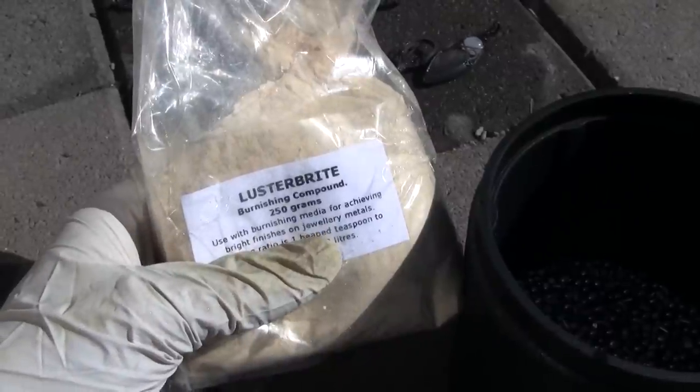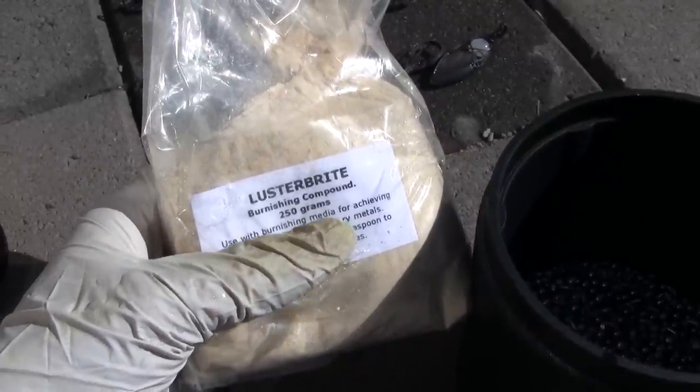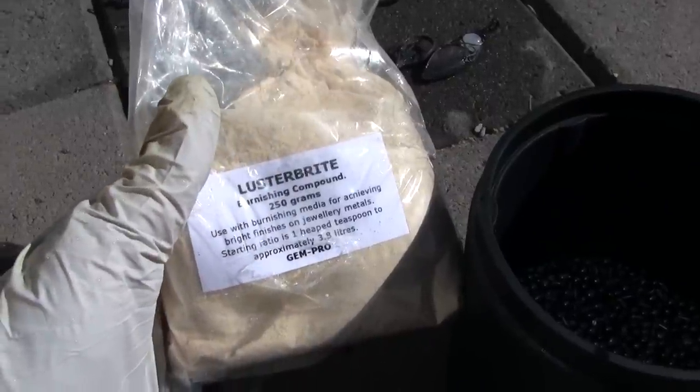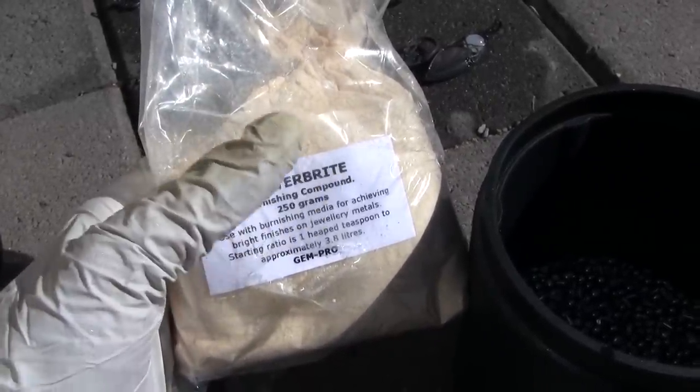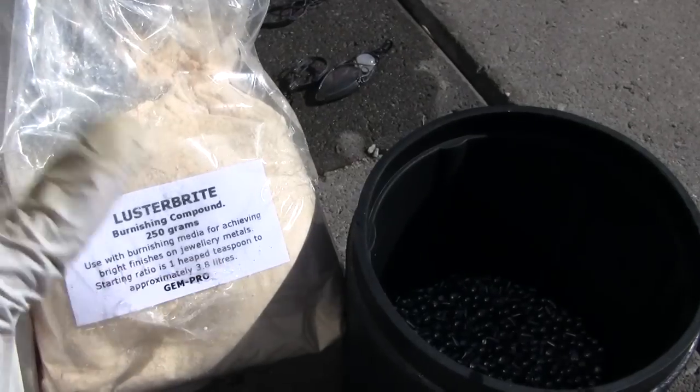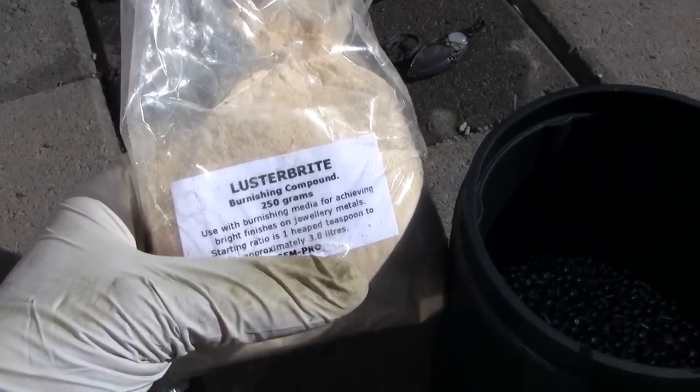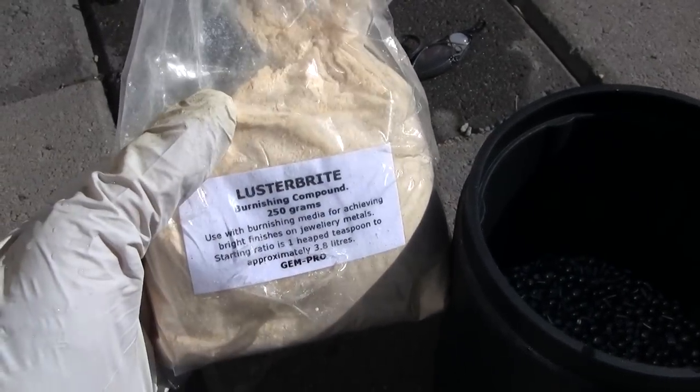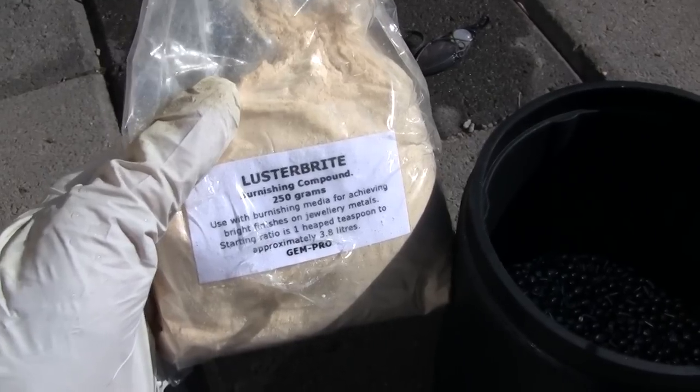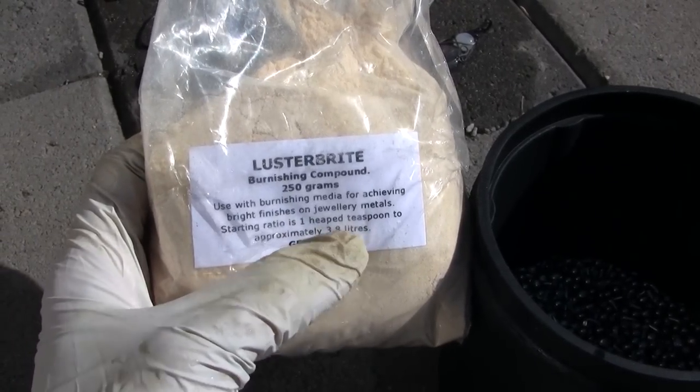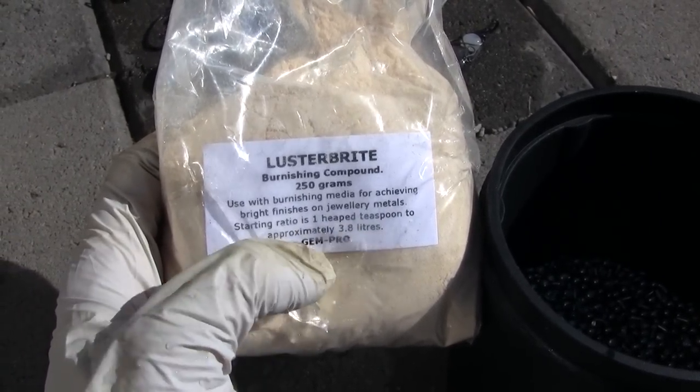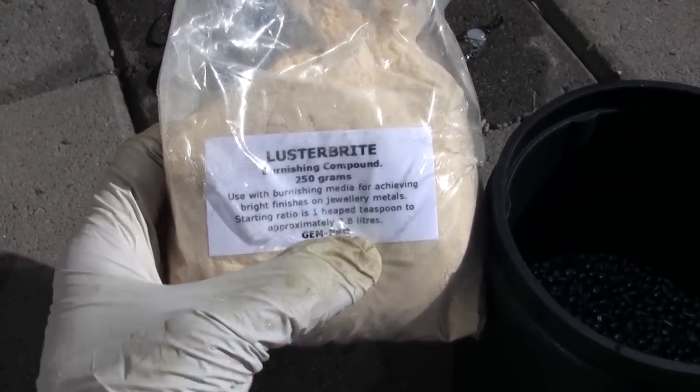But I think you can buy all the things separately. Now the burnishing powders, I heard some people say that you can use soap. I haven't tried that because I've also been warned that some soaps can eat away at the rubber and kind of destroy your tumbler. So I've just been using this because this is what, you know, it came with it. And the instructions are here. It says to use a heaped teaspoon to 3.8 liters.